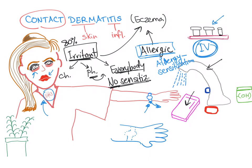How to treat it? First, we have to identify the offending agent and remove it — that's the first line. For symptoms, use cool compressors, topical steroids, and you can use aluminum acetate dissolved in water. If the condition is very severe, then you can use systemic steroids.